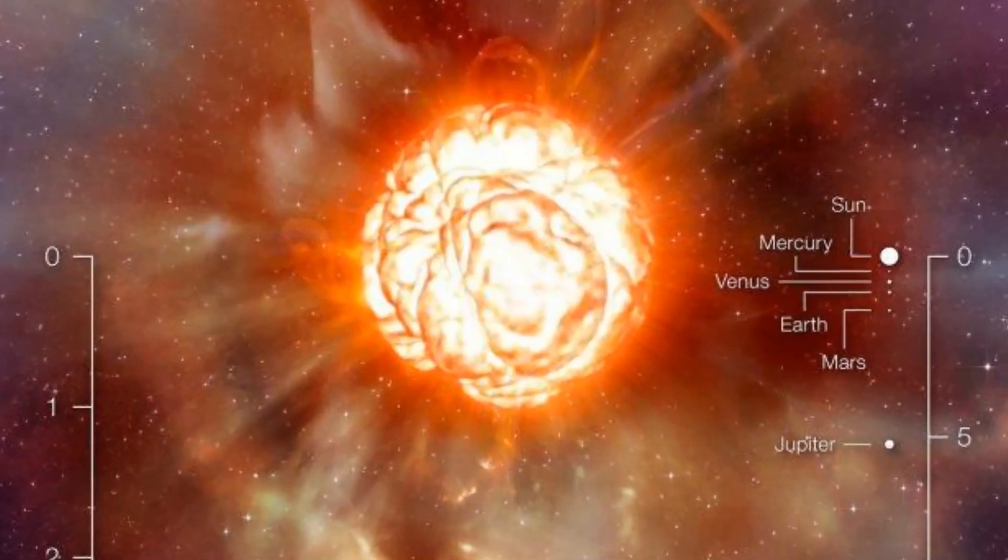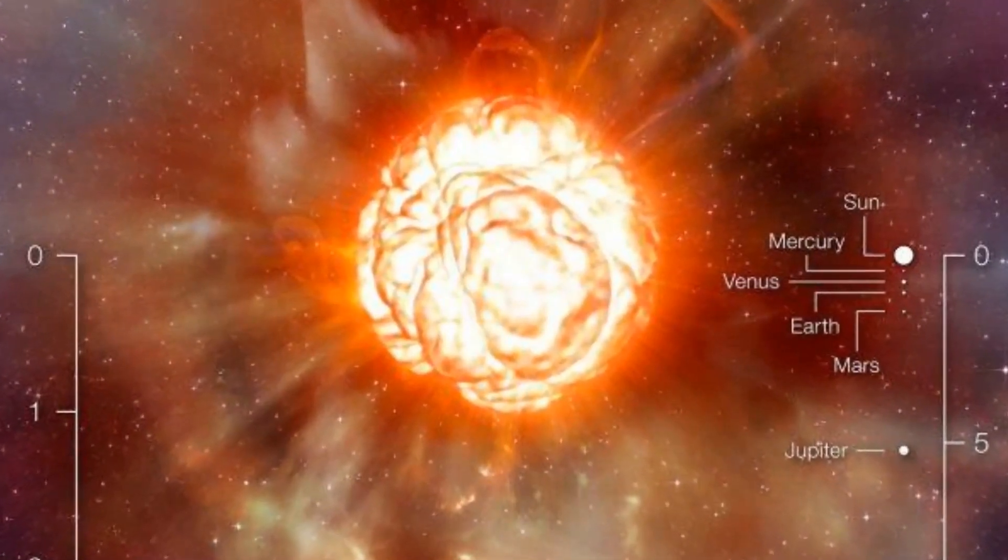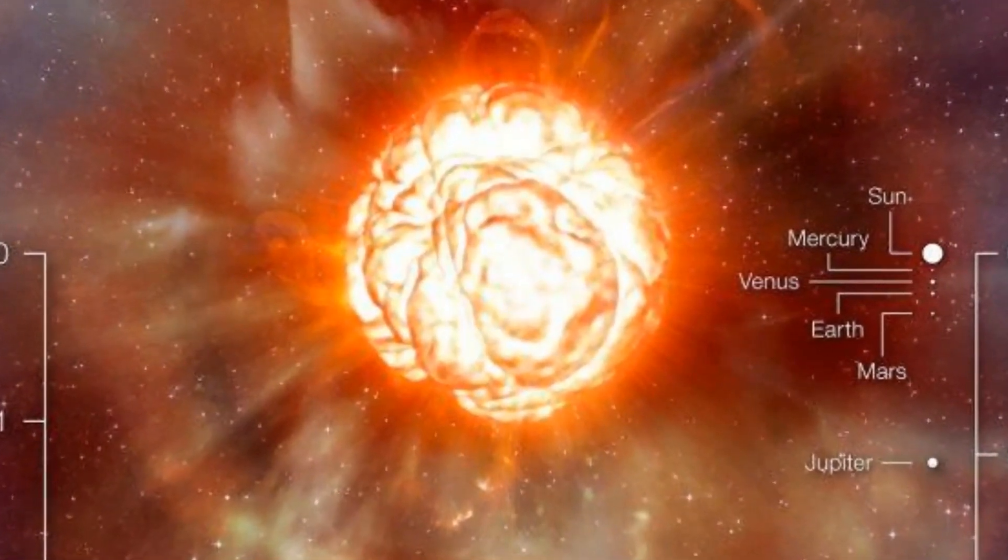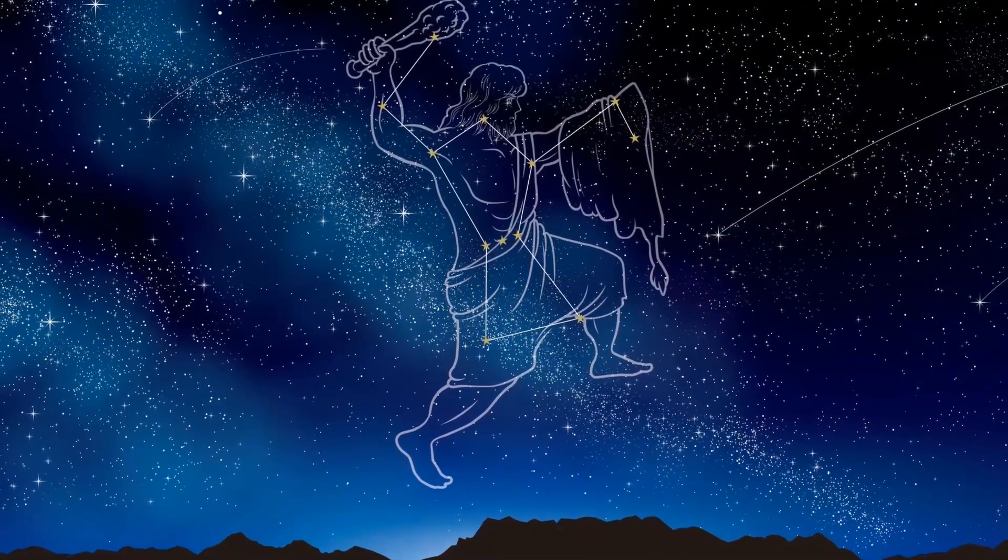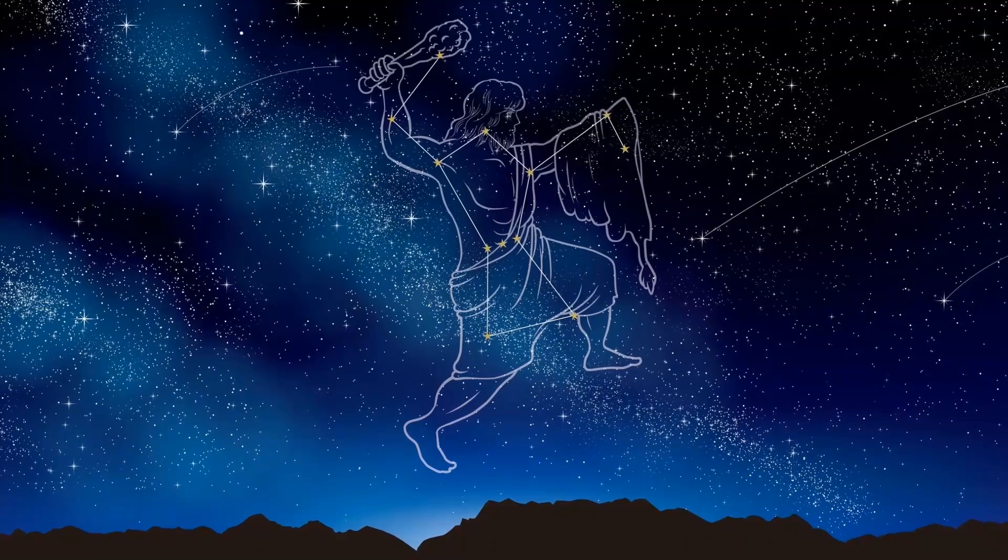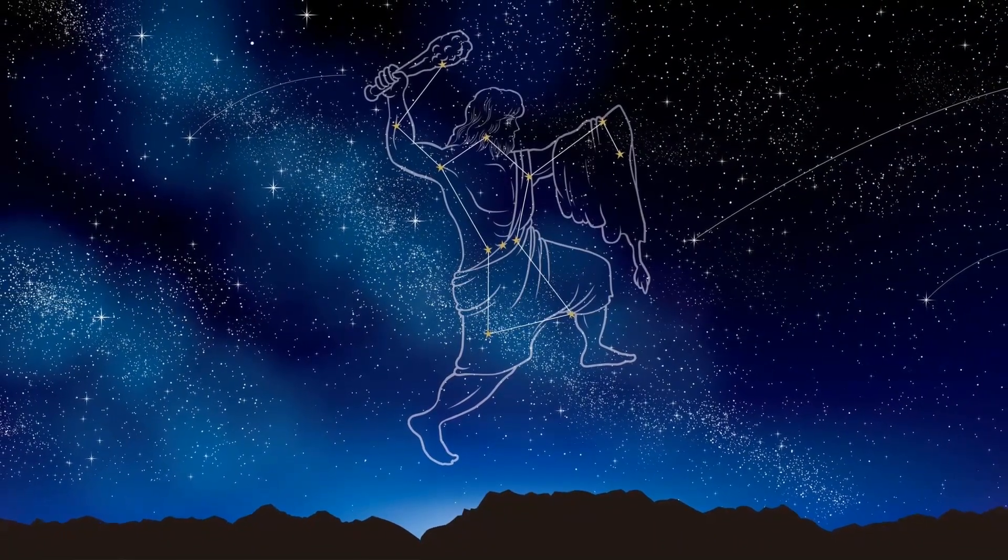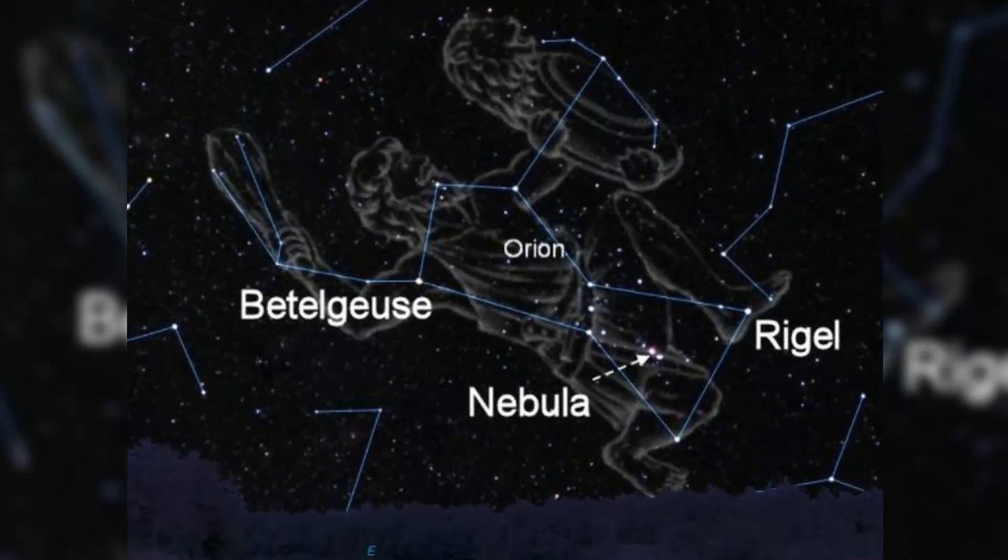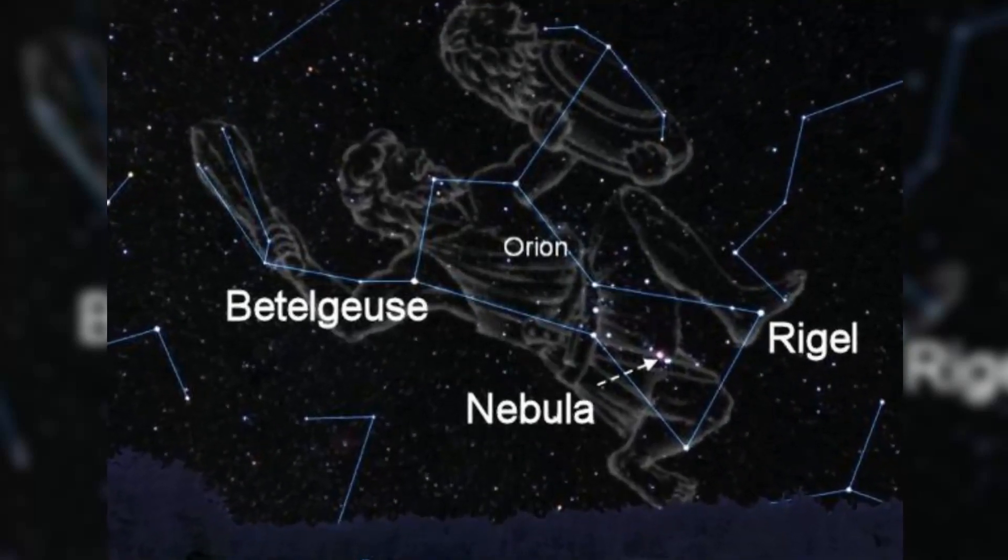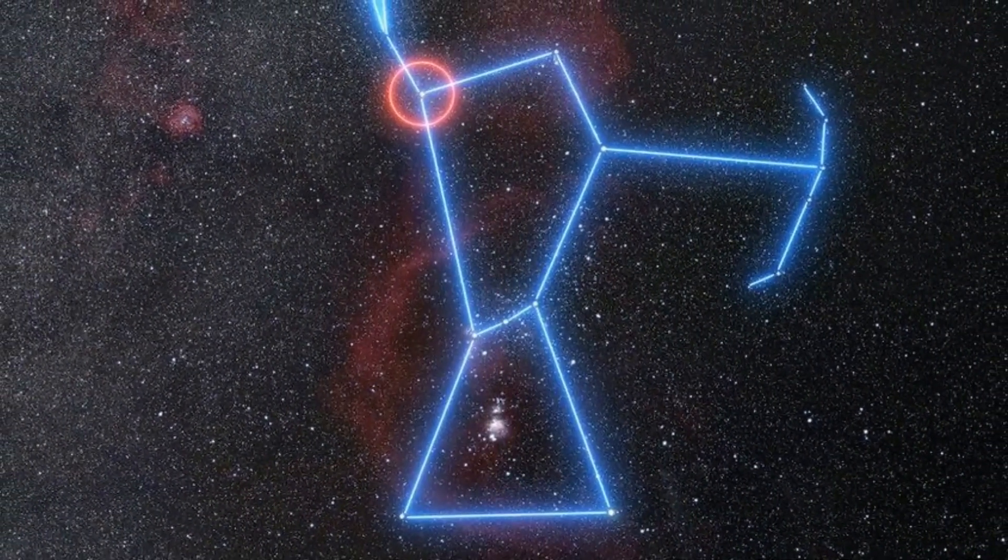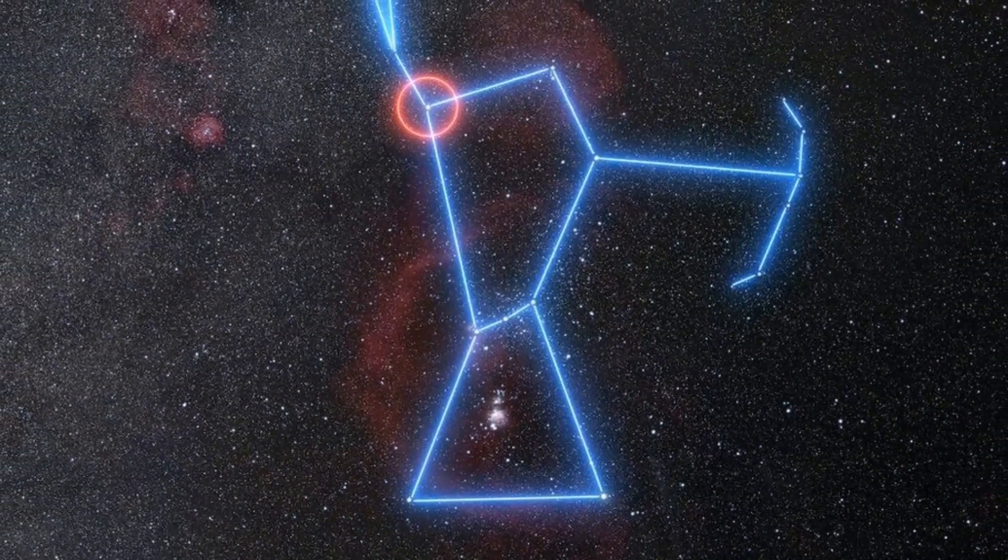Betelgeuse is going to explode, but it will likely take another 100,000 years. When it does go, astronomers are going to have to rethink the structure of Orion. If you stargaze on a clear winter night, it's hard to miss the constellation Orion the Hunter, with his shield in one arm and the other arm stretched high to the heavens. Betelgeuse marks Orion's shoulder, and this star's strange dimming has captivated skygazers for thousands of years. Aboriginal Australians may have even worked it into their oral histories.